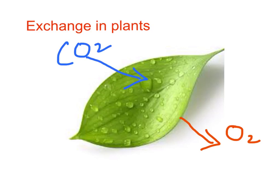The key thing to notice about the leaf is that it's very flat. This means two things: flattening objects gives them a bigger surface area, and there's less distance for the gases to diffuse through to either get into or out of the leaf for exchange. Let me explain by looking at a cross-section through the leaf.